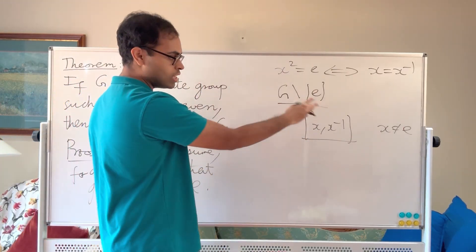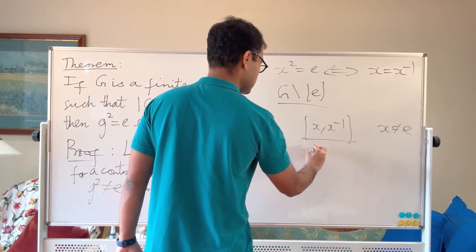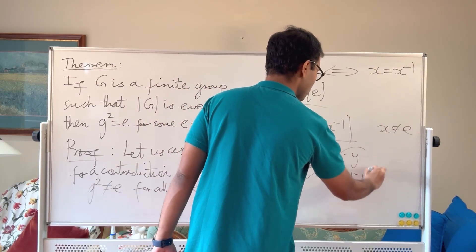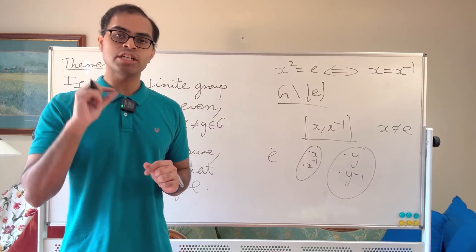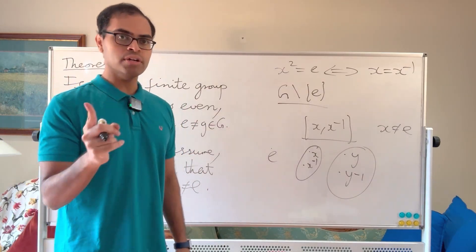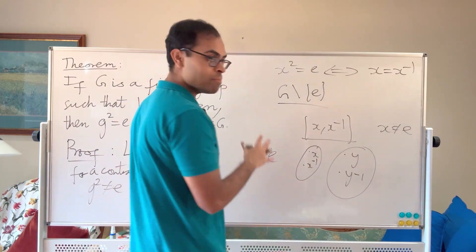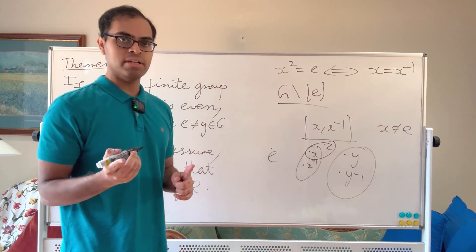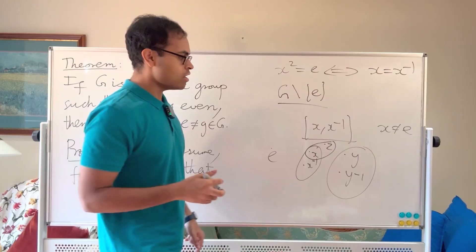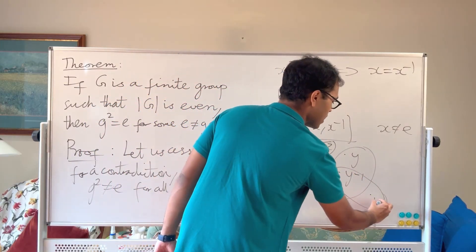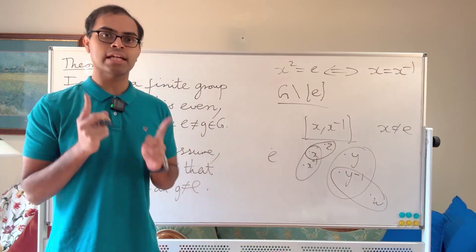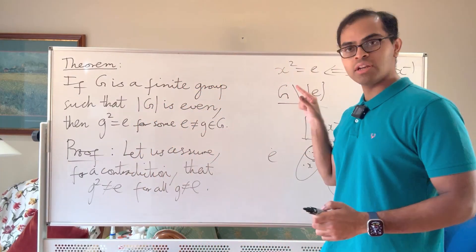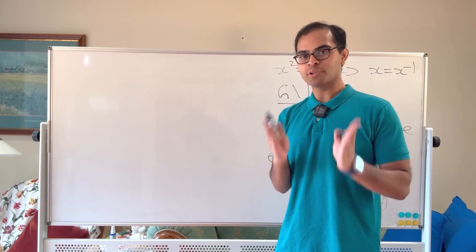So you've got these two-element sets, and we want to show that all the non-identity elements are neatly partitioned into them. You can visualize it: here's your group, you've got x and x inverse, maybe y and y inverse. We want to show there isn't an overlap with another two-element set of the form {z, z⁻¹}, or some {w, w⁻¹} overlapping. We have to check that's not the case — rigorously, because these things can be deceptive.